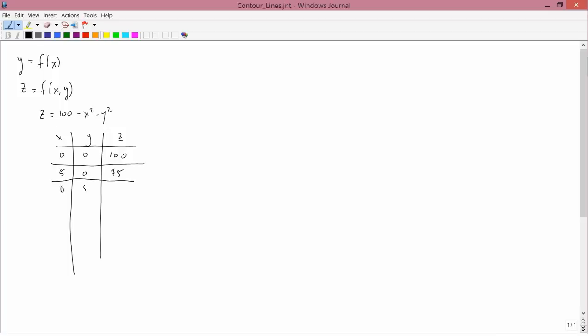If x is 0 and y is 5, then we'd have 100 minus 0 squared minus 5 squared, which again is going to be 75. And similarly, if we had negative 5 and 0, we'd have 75. And if we had 0 and negative 5, we'd have 75.